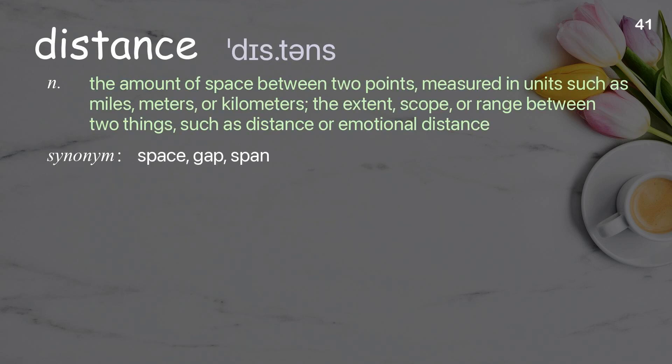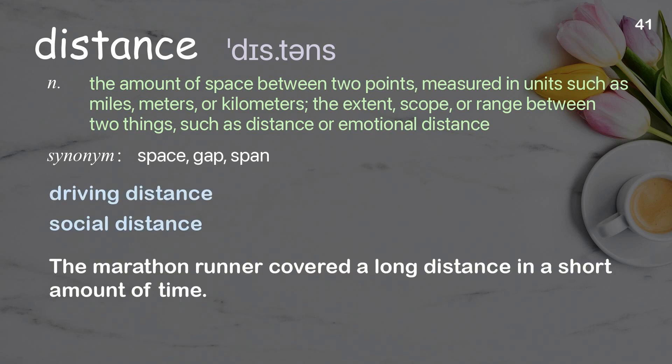Distance: the amount of space between two points, measured in units such as miles, meters or kilometers; the extent, scope or range between two things such as physical or emotional distance. Examples: driving distance, social distance. The marathon runner covered a long distance in a short amount of time.